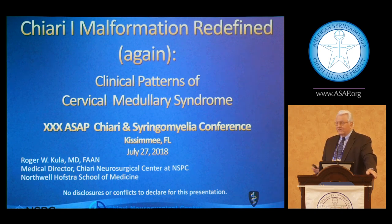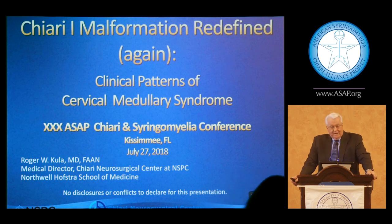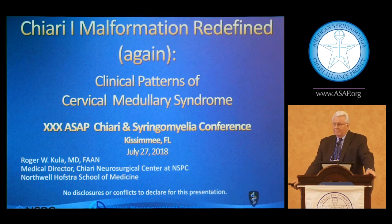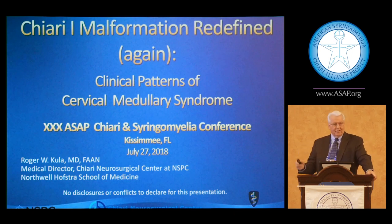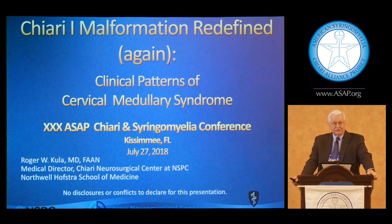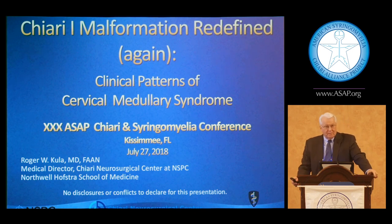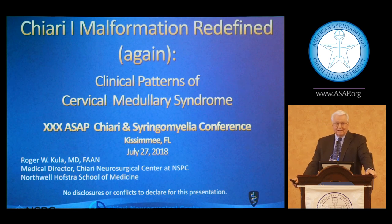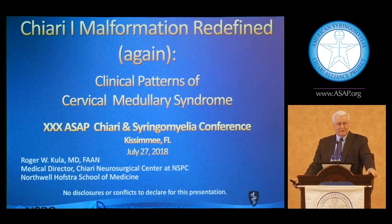Chiari malformation has a long and interesting story, and I'd like to try to put a little bit of a historical perspective on the evolution of our understanding about this disorder. It really dates back to the mid-1800s. Chiari first described about six patients in about 1860 that actually had tonsillar descent — these were all recognized on autopsy cases, which is pretty much how Chiari got understood early on.